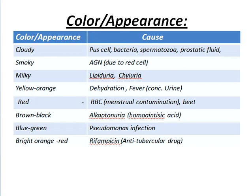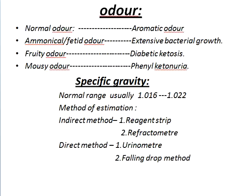Milky colour is due to lipiduria and chyluria. Yellow-orange colour is due to dehydration and fever. Red colour is due to RBCs, from menstrual contamination and beet ingestion. Brown-black colour is due to alkaptonuria and homogentisic acid. Blue-green colour is due to Pseudomonas infection. Bright orange-red colour is due to RBCs or anti-tubercular drugs.